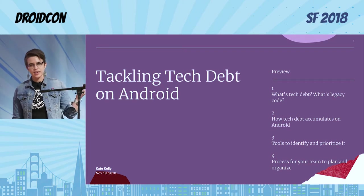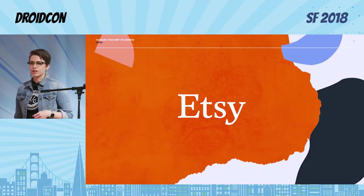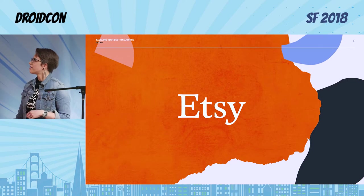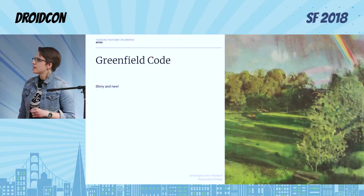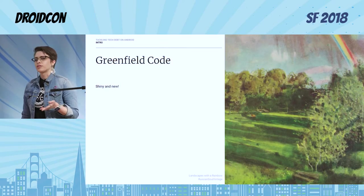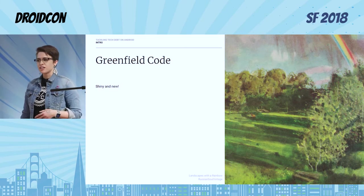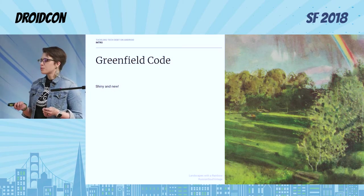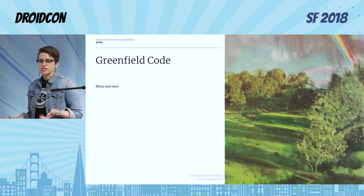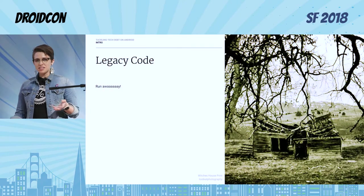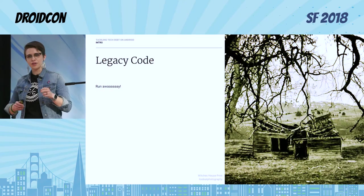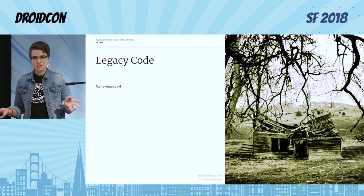A little bit about me. I'm Kate Kelly. I work at Etsy — the views are my own in this presentation. Before I worked at Etsy, I worked on a bunch of greenfield code in consulting. Different clients wanted different stuff, I was writing new code all the time. It was great, it was shiny. But then I would also work with code that had come from other contractors, and it was really scary. This was introduced to me as legacy code.